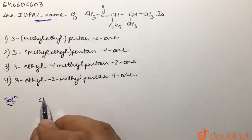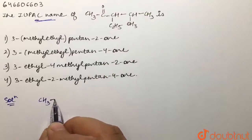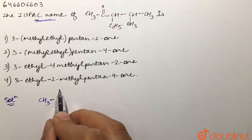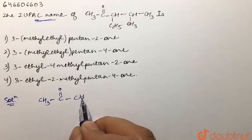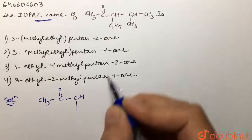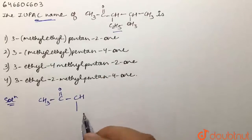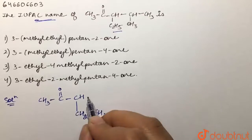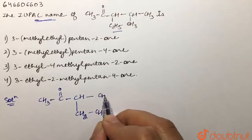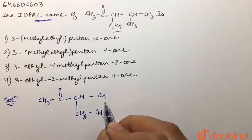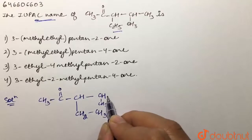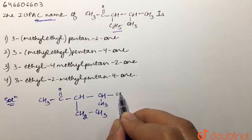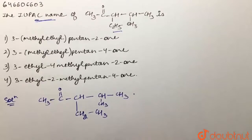First of all, we'll write the structure of the compound: CH3, then we have CO, and then we have a CH group. Below we are given C2H5, which we can open and write as CH2-CH3. Then we have CH with CH3 present, and then we have another CH3 present.